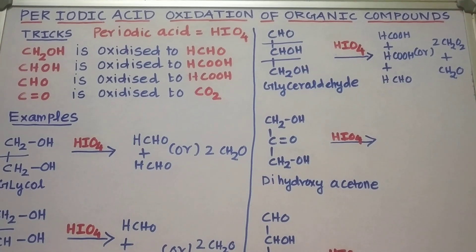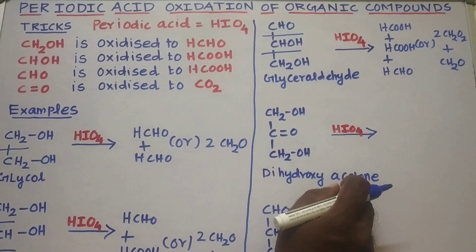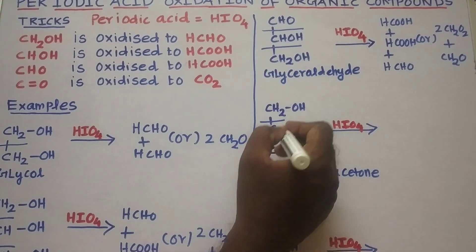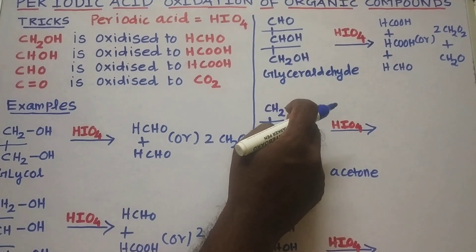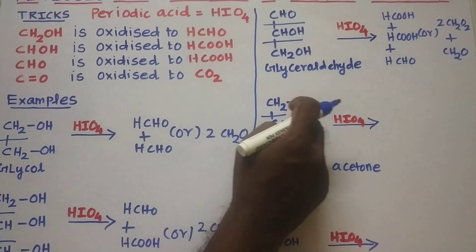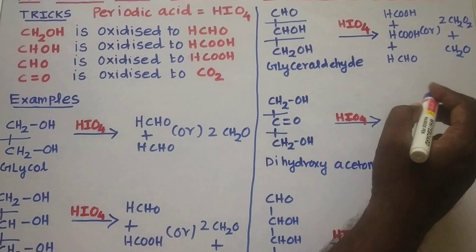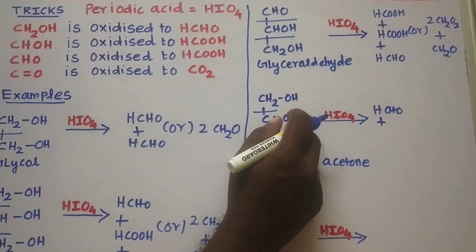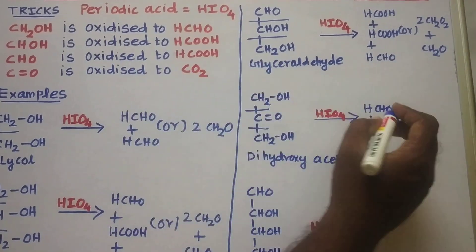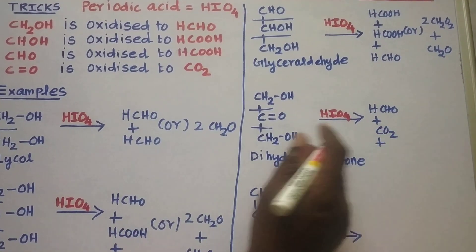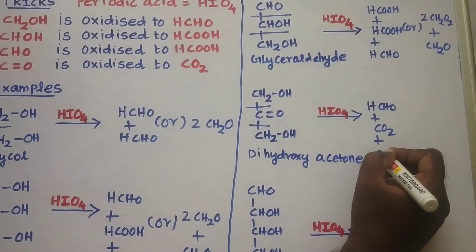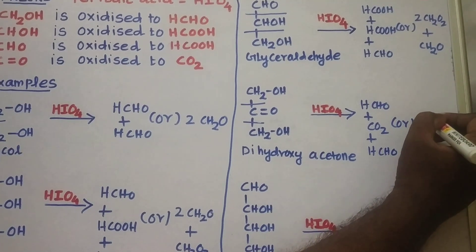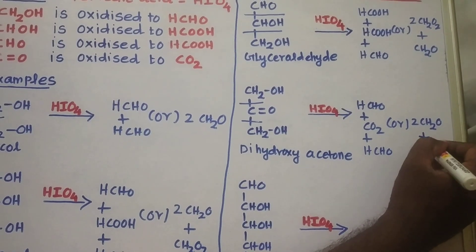Example number 4: that is dihydroxyacetone — CH2OH, middle part C=O, and bottom CH2OH. The top CH2OH, a primary alcohol group, is oxidized by periodic acid into formaldehyde, HCHO. Plus, the C=O, meaning the ketonic group present in this compound, is oxidized to carbon dioxide, CO2. Then the bottom group, the primary alcohol group, is also oxidized to formaldehyde. So we get two molecules of formaldehyde plus one molecule of carbon dioxide.